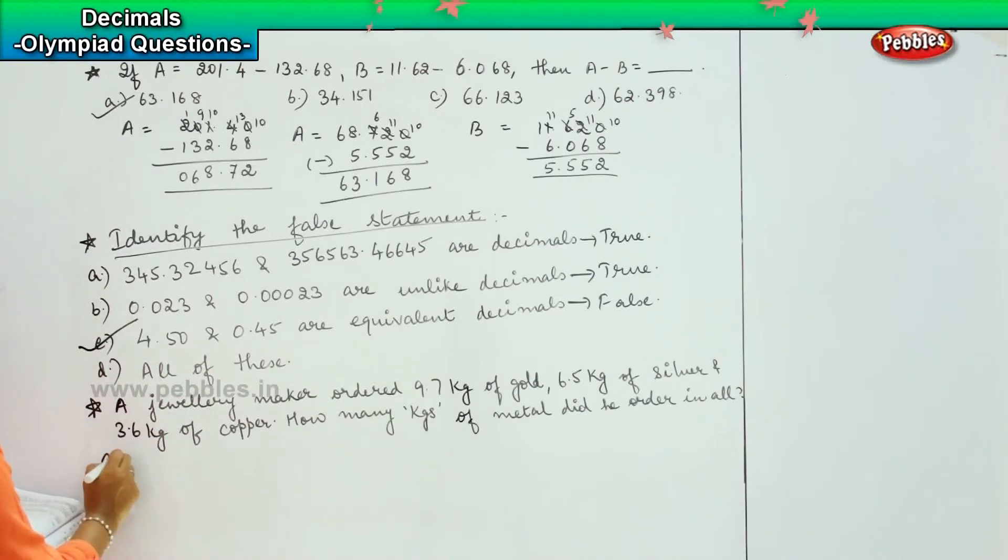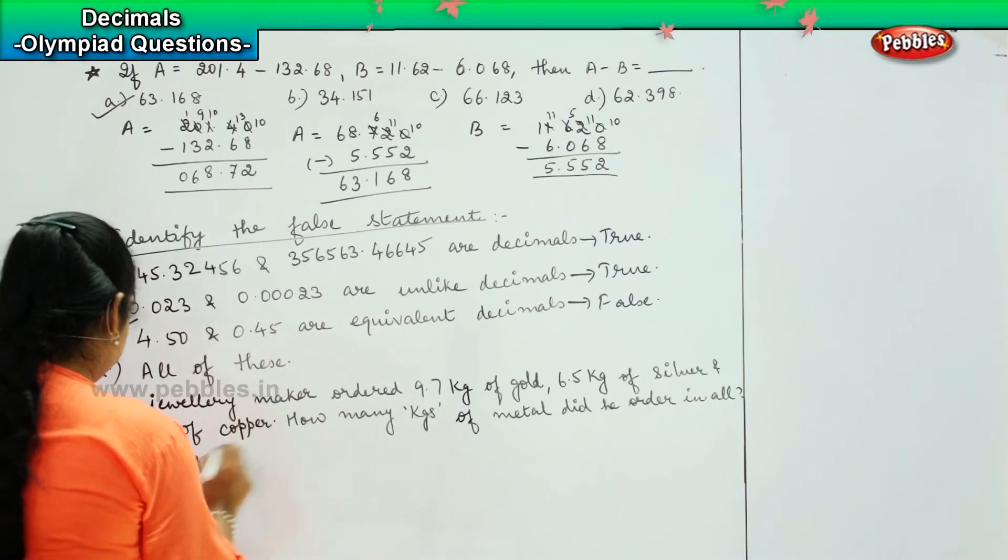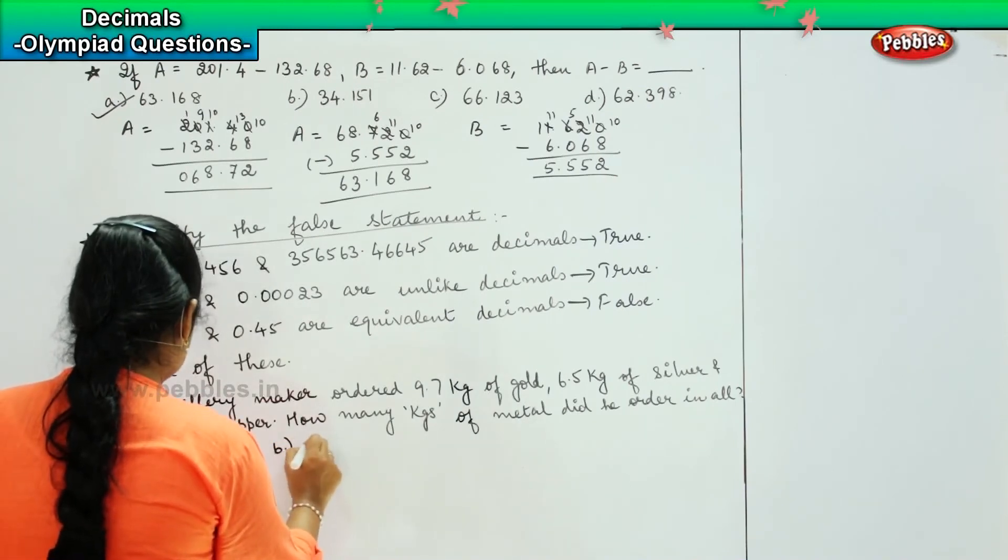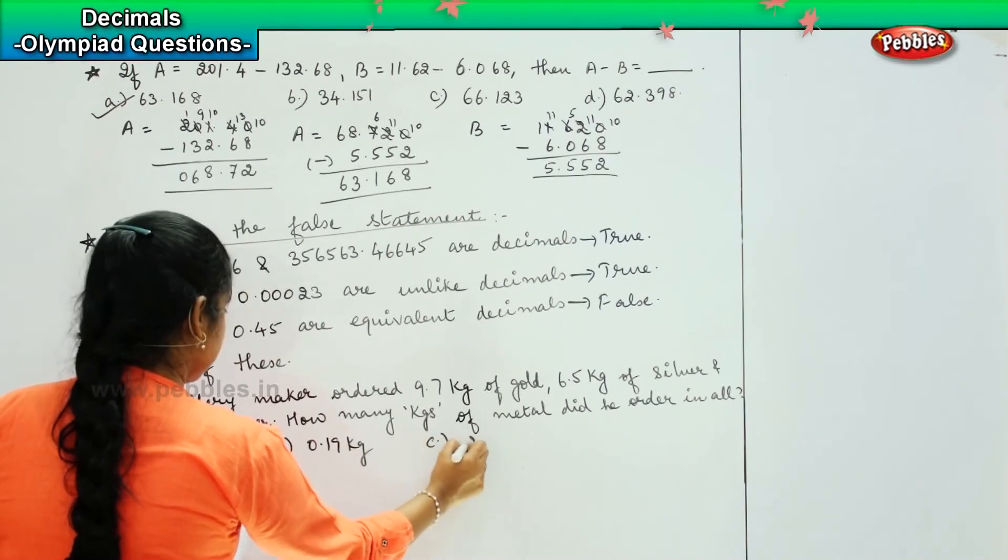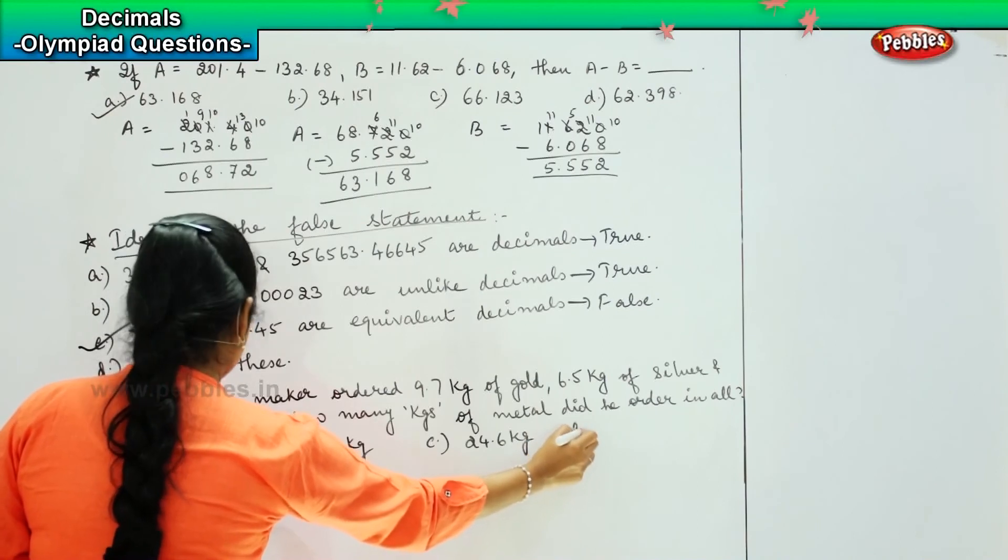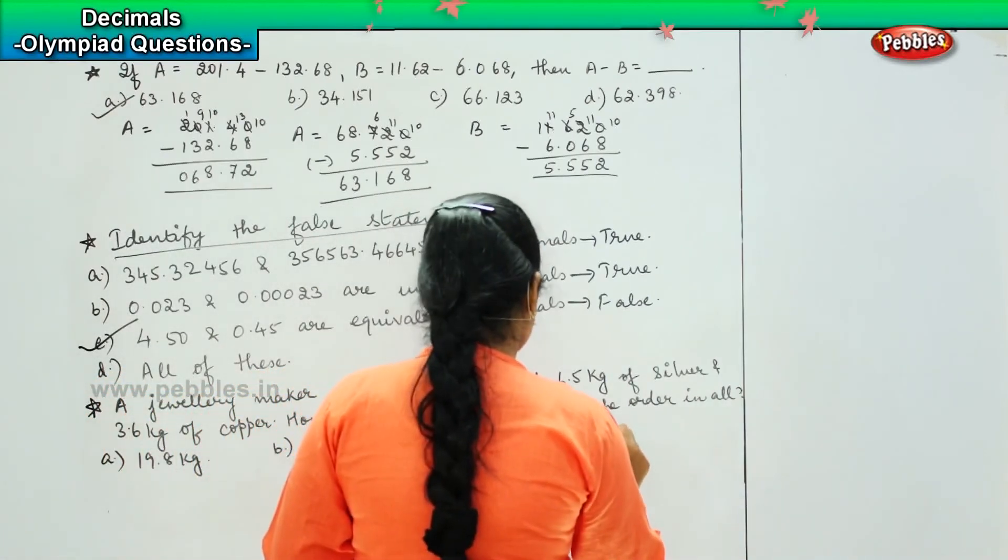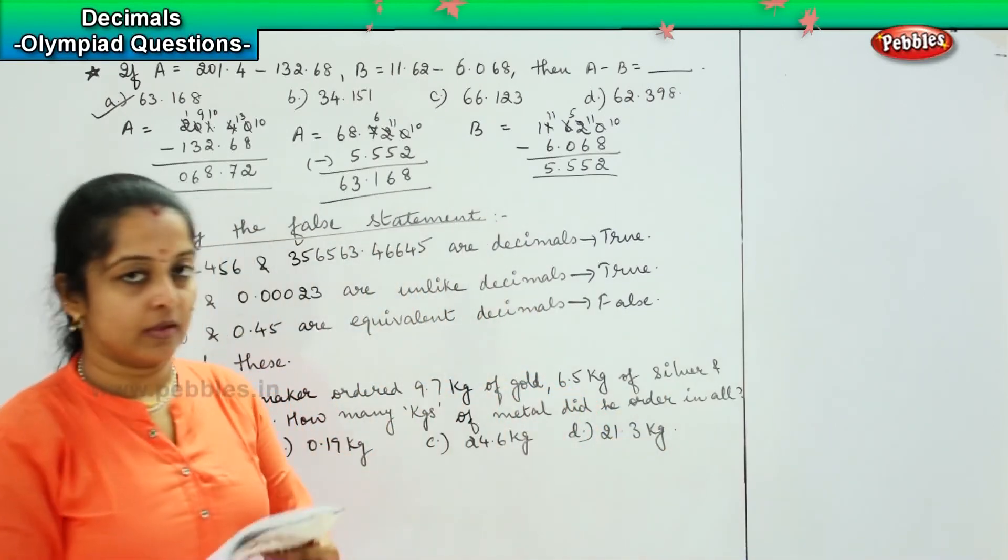And your options are 19.8 kg, option B, 0.19 kg, option C, 24.6 kg, and option D, 21.3 kg.